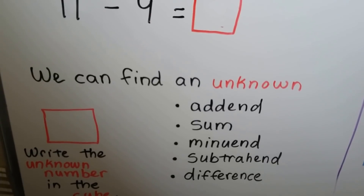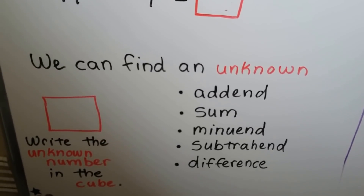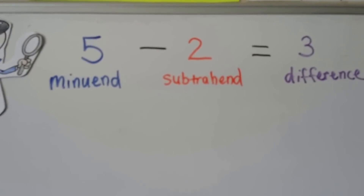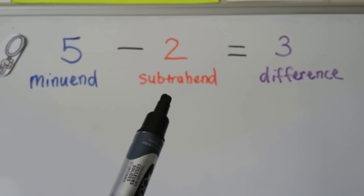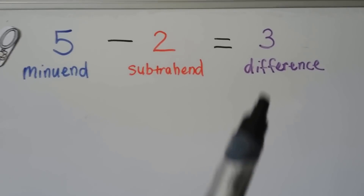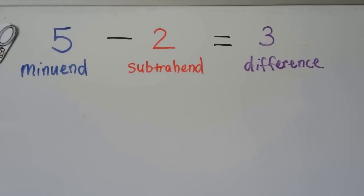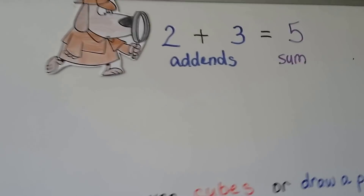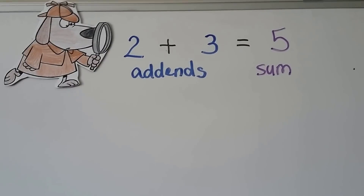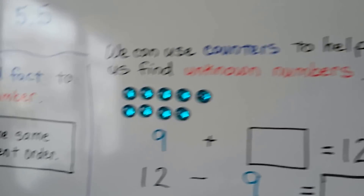We can find an unknown addend, sum, minuend, subtrahend, or difference — we write the unknown number in the empty cube. In a subtraction sentence, the first number is the minuend, the second is the subtrahend (the amount we're taking away), and the answer is the difference. In an addition problem, the numbers we add together are the addends, and the answer is the sum.